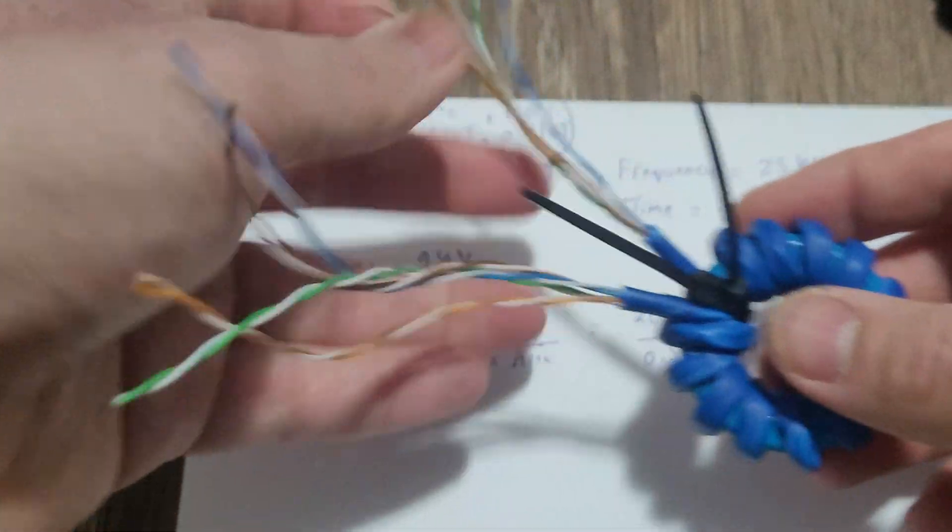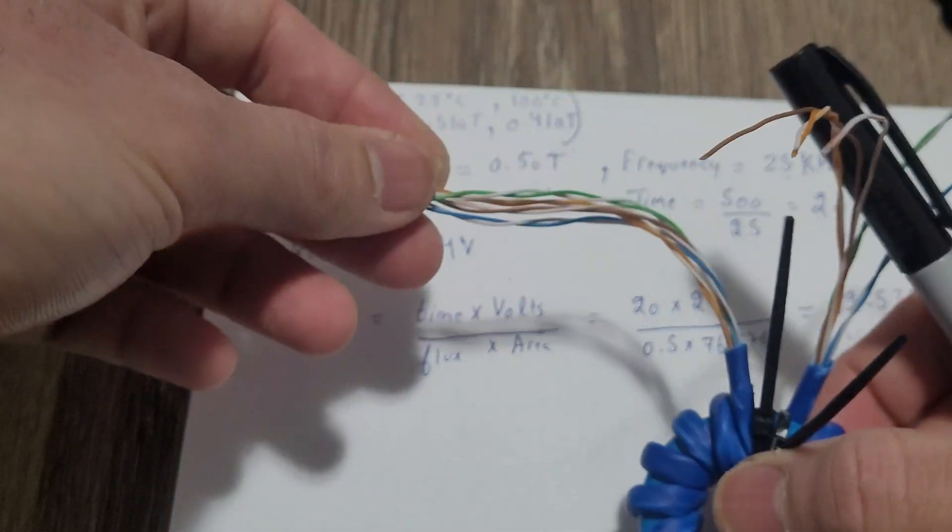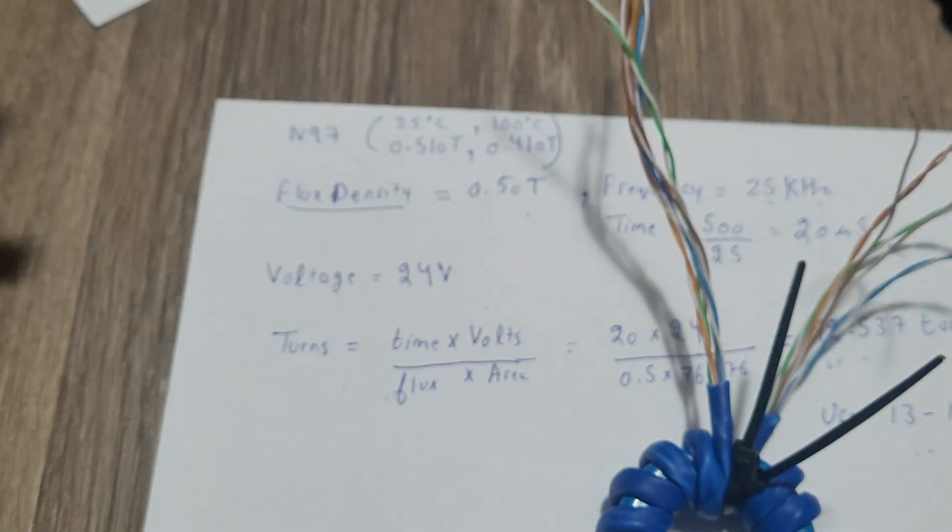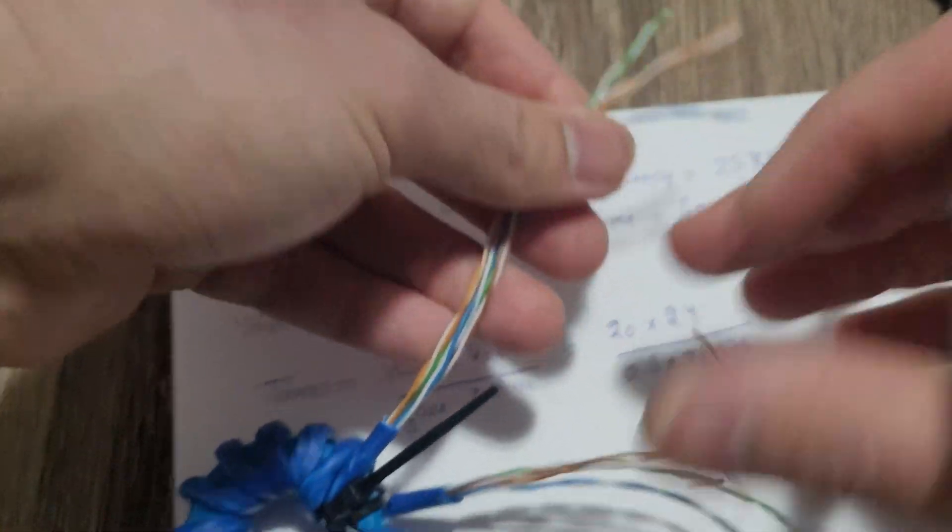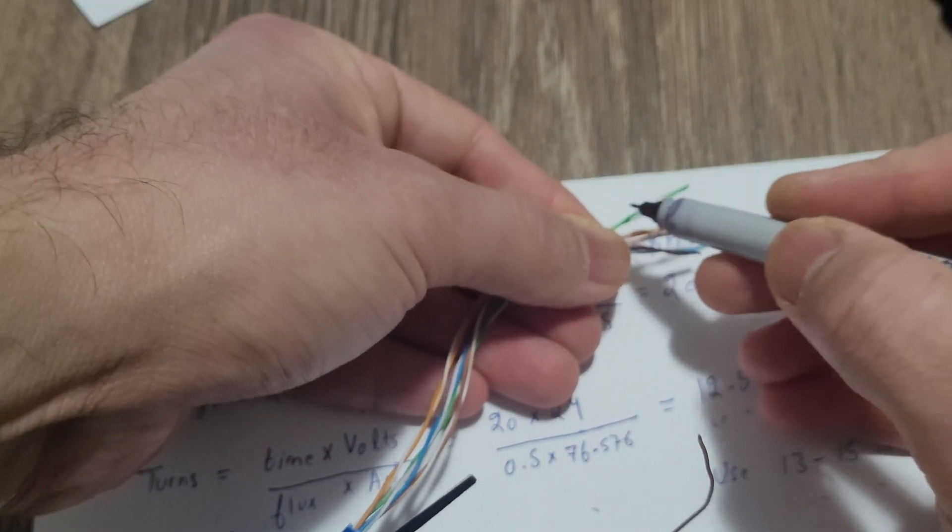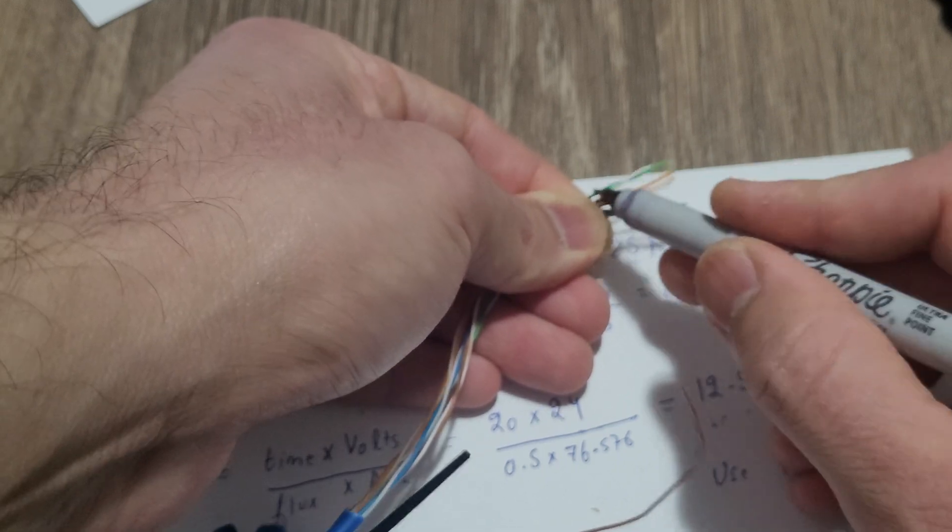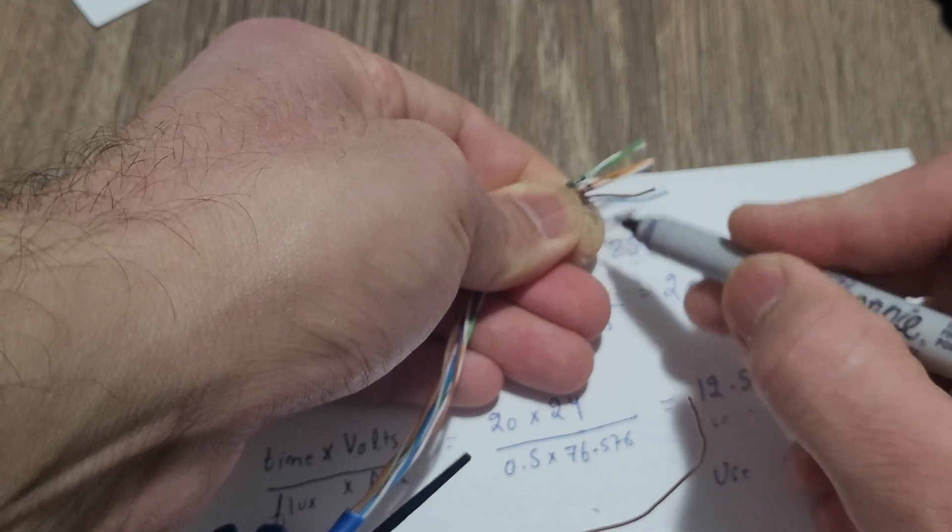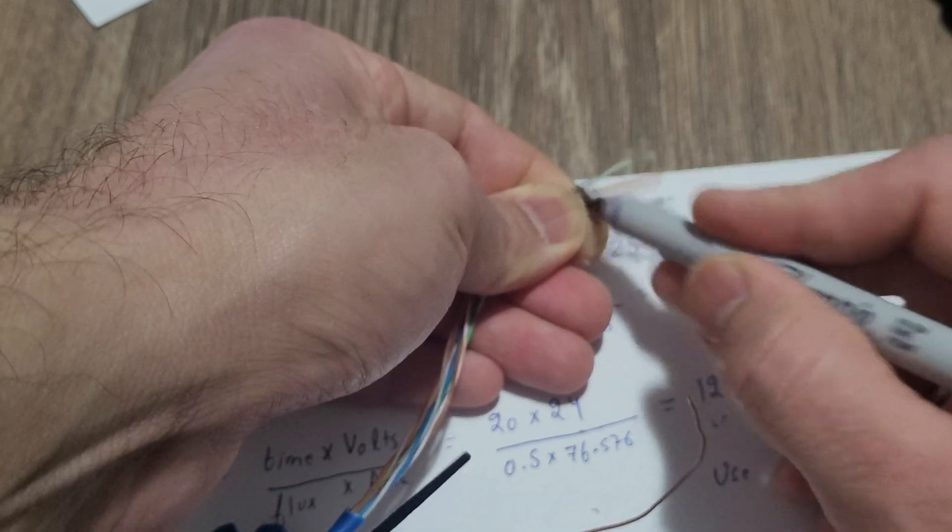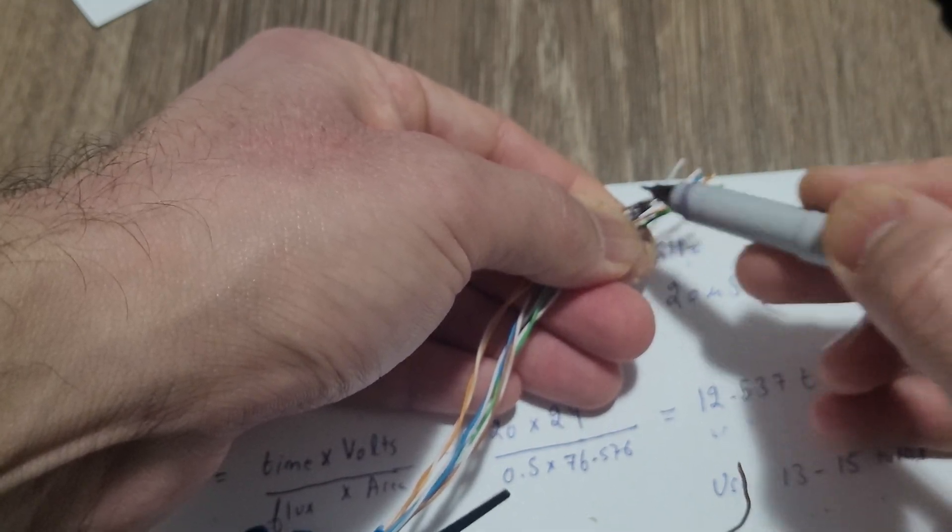So when you are done winding the toroid core, take a marker and mark one side of the wire, all of them. Make sure you mark them properly.